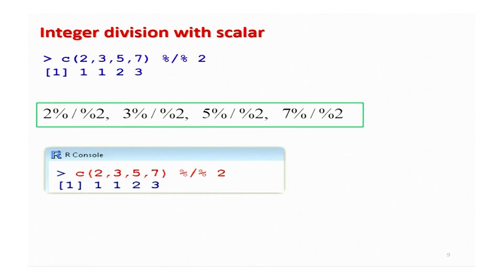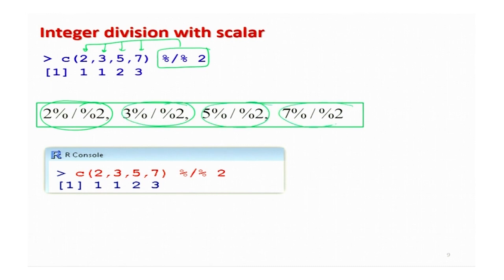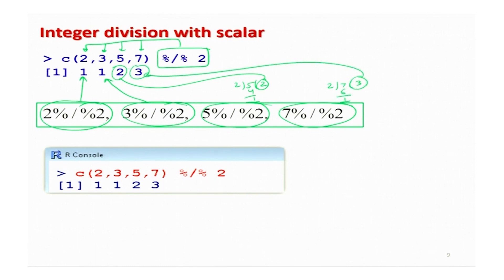For integer division with one data vector and a scalar, the same recycling rule applies. For example, `c(2, 3, 5, 7) %/% 2` operates on each element: 2÷2=1, 3÷2=1, 5÷2=2, and 7÷2=3. This is exactly the same way other operations like addition, subtraction, multiplication, and division work when applied to a data vector with a scalar.